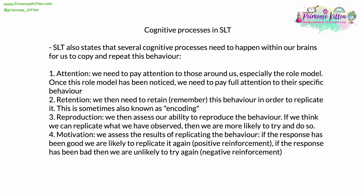Aside from behavioral processes, SLT also states that several cognitive processes need to happen — processes within our brains that allow us to copy and then repeat behavior, and there are four of these. The first is attention: we need to pay attention to those in our immediate social group, especially anyone identified as a possible role model, and then pay full attention to their specific displayed behavior. The second is retention: we need to be able to retain or remember this behavior in order to replicate it at a later date. This is sometimes also known as encoding.